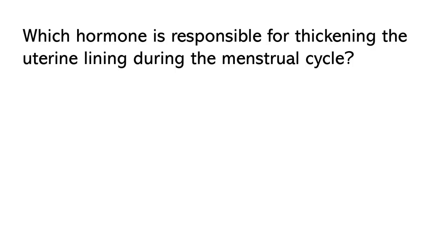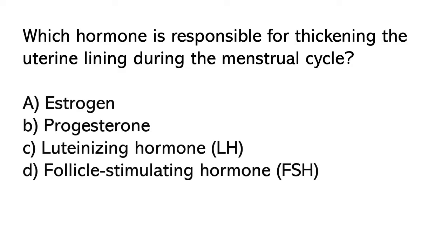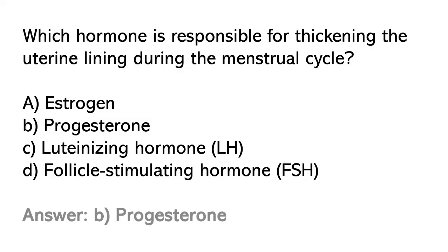Which hormone is responsible for thickening the uterine lining during the menstrual cycle? Options: A) Estrogen, B) Progesterone, C) Luteinizing hormone, D) Follicle stimulating hormone. So the correct answer is option B. Progesterone.